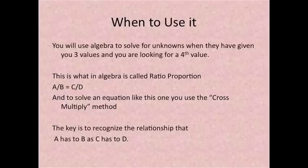A over B is equal to C over D. You don't want to see that do you? And to solve an equation like this one you use the cross multiply method. The key is to recognize the relationship that A has to B as C has to D.